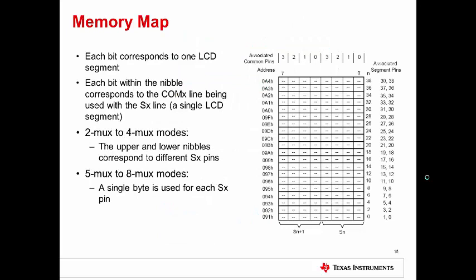The way that you indicate in your software which segments should be on or off is through the LCD memory registers. Each bit represents a single LCD segment connected to a common and segment pin pair. The row corresponds to the segment pin, and the columns, each bit within the row, correspond to the common pin. In two mux through four mux modes, the upper and lower nibbles of each row correspond to different segment SX pins. In five mux to eight mux modes, there are more than four common pins, so the whole row must be used for each segment SX pin. The example at right shows the memory configuration in two mux to four mux mode. You can see that the 38 and 39 segment pins correspond to the lower and upper nibbles of the byte. And to control the segment connected to COM0 plus S38 and COM0 plus S39, you would have to set the highlighted bits high or low.